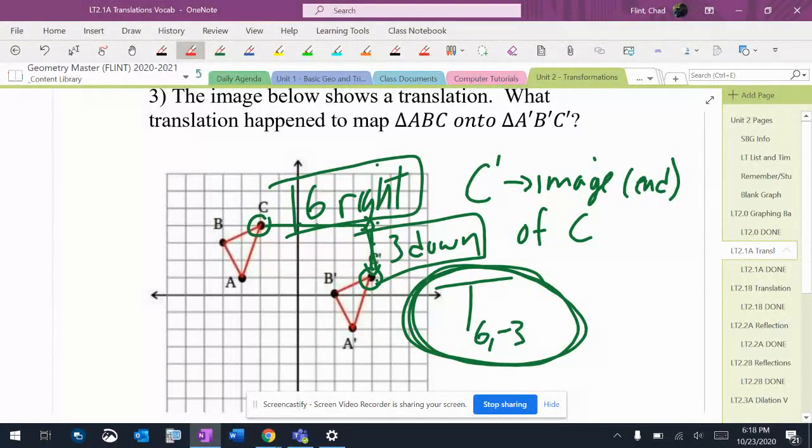Now, if you're not sure, check the other ones. A, 1, 2, 3, 4, 5, 6, 1, 2, 3. All right, and then B, 1, 2, 3, 4, 5, 6, 1, 2, 3. They all should do the exact same thing. All right.